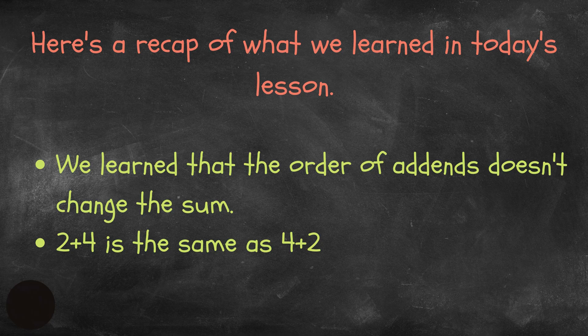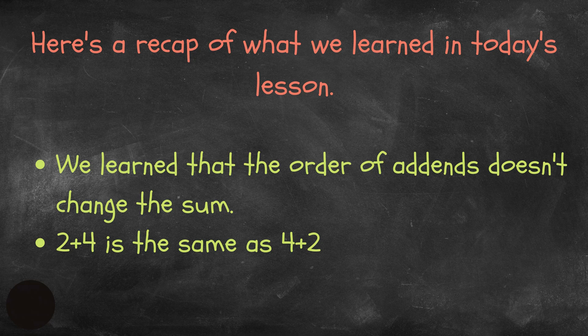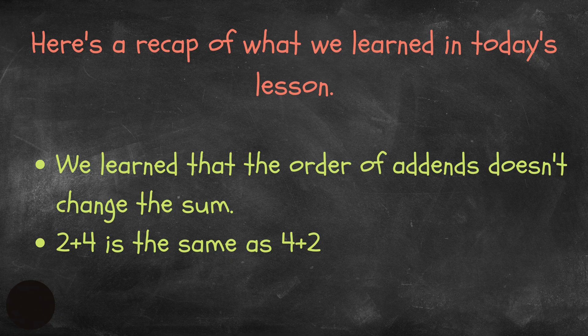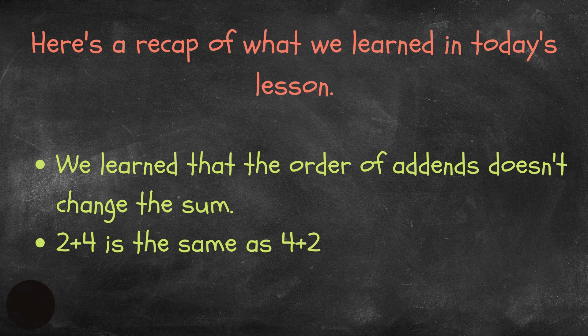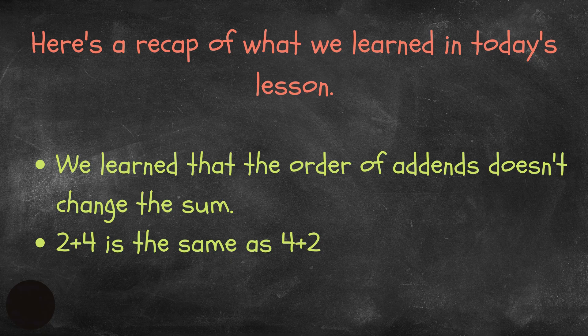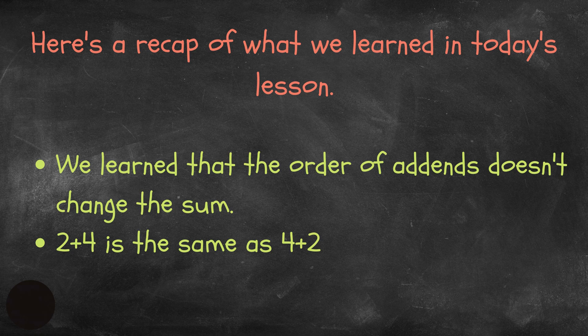Here's a recap of what we learned in today's lesson. We learned that the order of the addends doesn't change the sum, and this is also called the commutative property of addition. So, 2 plus 4 is the same as 4 plus 2. As long as we are adding, the order of the addends does not matter, and we will always have the same sum.